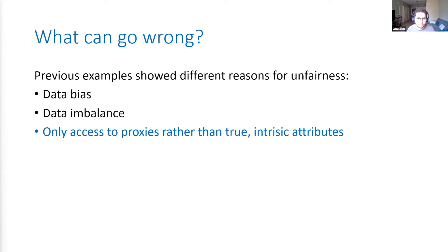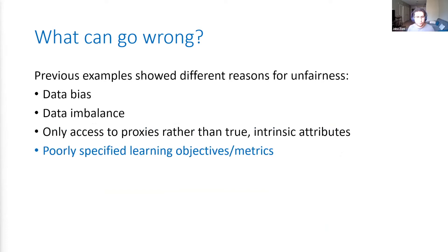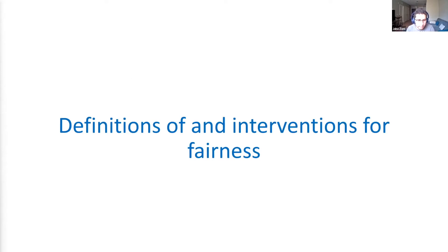Generally, you're only going to have access to proxies rather than true interesting attributes about someone. Another possible reason for unfairness is that you might just have poorly specified your learning objectives and metrics, or you might unconsciously have put some of your bias into your learning objective, causing your algorithm to do something unfair. There are many other reasons unfairness can happen — those are just a few. Now I want to talk more about how we think about these issues: what kinds of definitions and metrics we look at for fairness, and what kinds of interventions can make algorithms more fair.